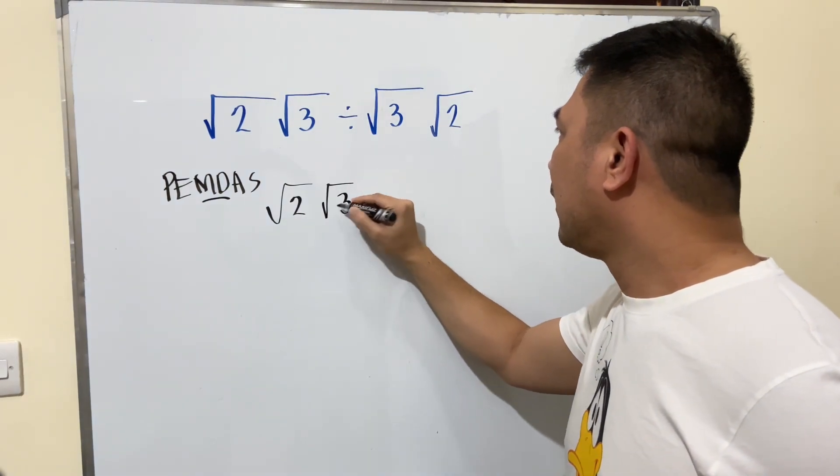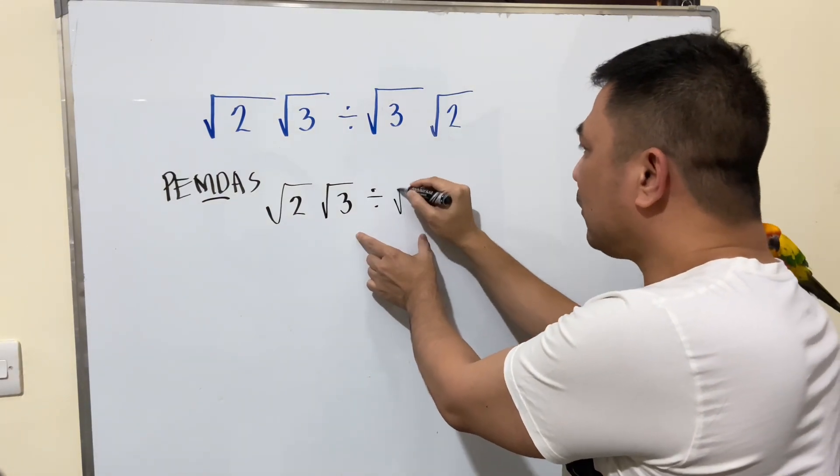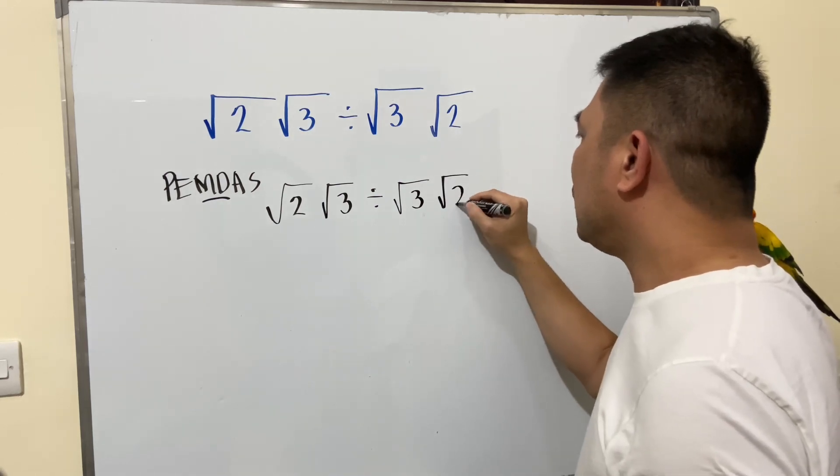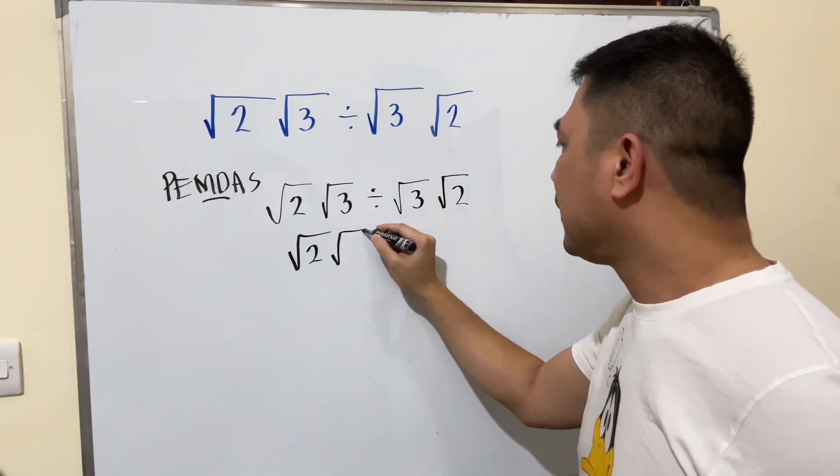Then times square root of two. If you try to simplify that one, square root of two, square root of three, divided by square root of three. This will cancel. Multiply now by square root of two.